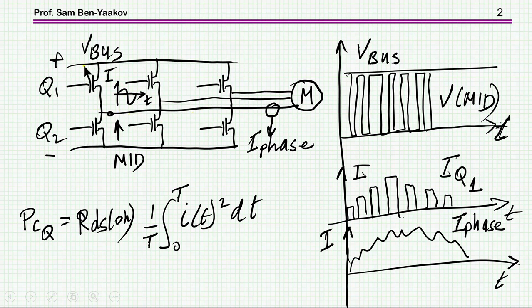Let's have a look at the left half bridge, Q1, Q2, and in particular Q1. Now this is the midpoint, and this midpoint will be swinging between 0 and Vbus. It's a modulated voltage, so that the average is the sinusoidal waveform, the voltage that we need here.